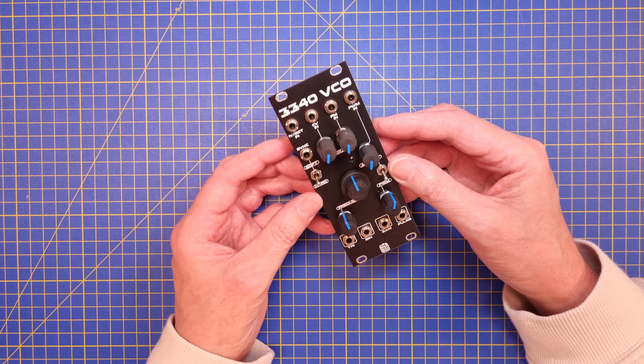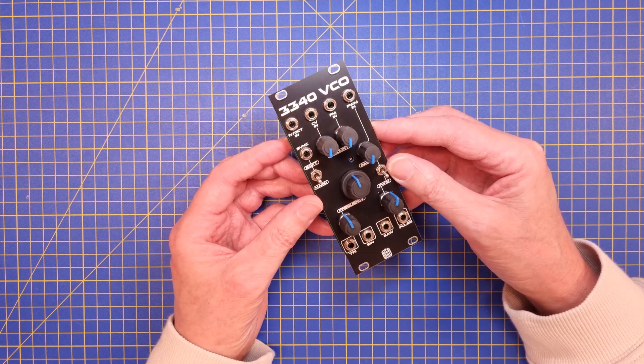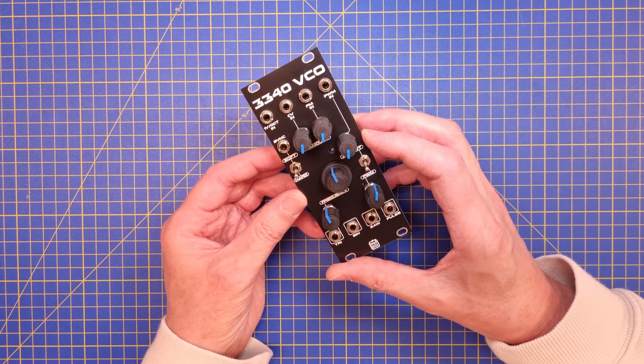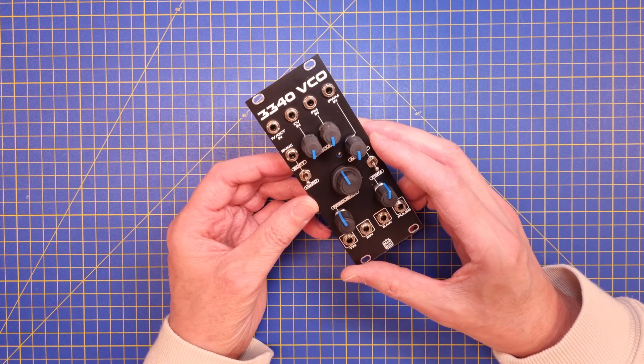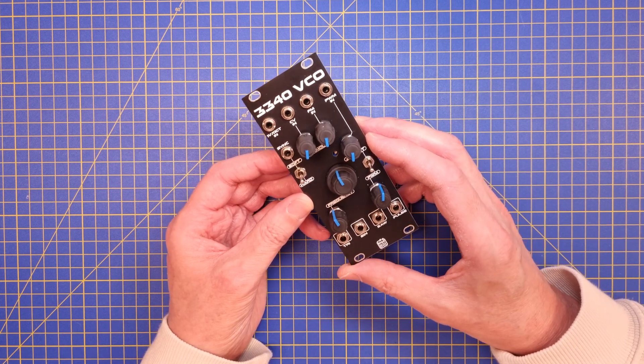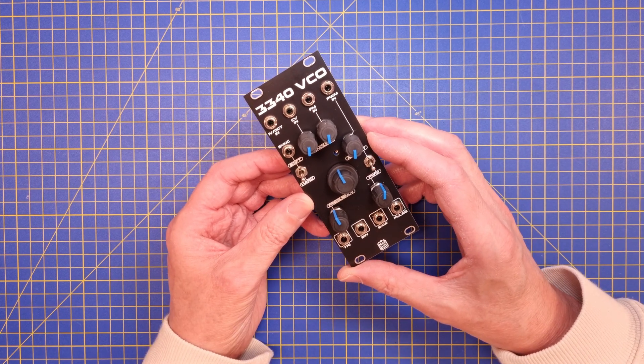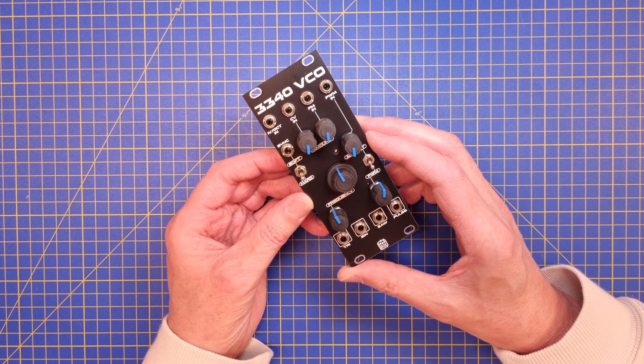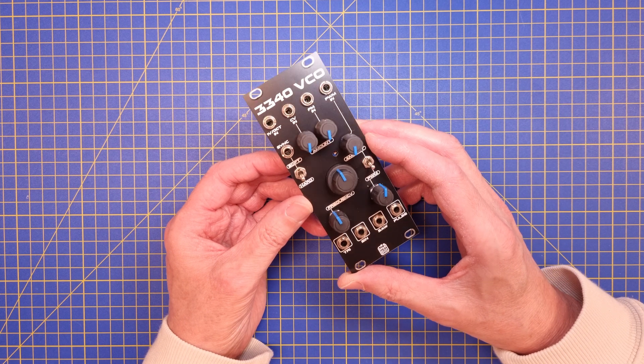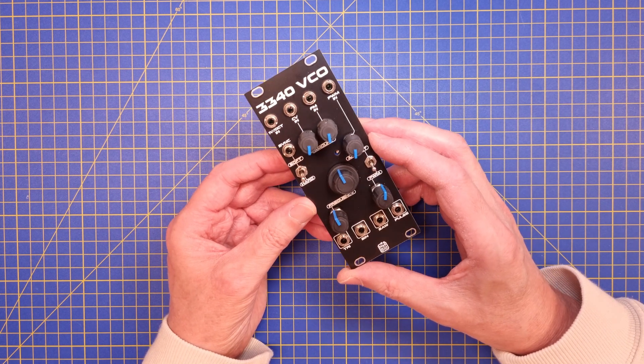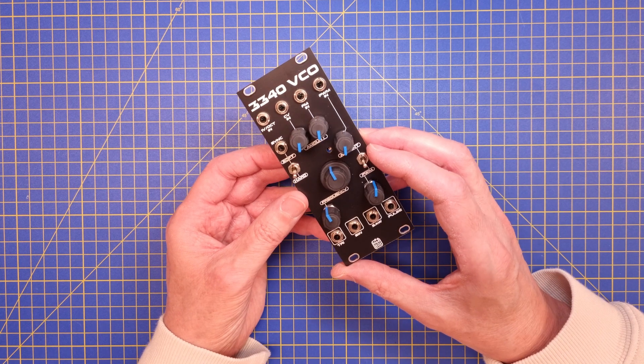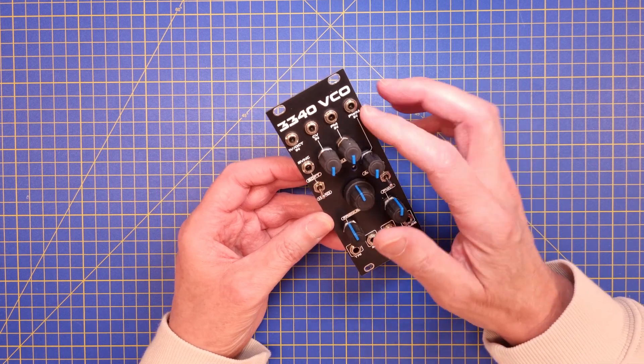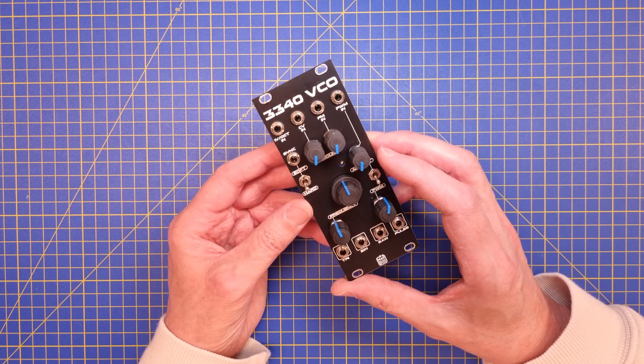I must say that this is probably the module that I have spent most time doing research for, and the reason for that is that there are so many different VCO designs out there and I really couldn't make up my mind which way to go. If I should make my own design or base it on a discrete design with separate submodules or if I should go for an integrated circuit solution like this one.